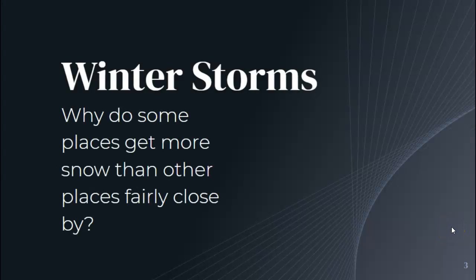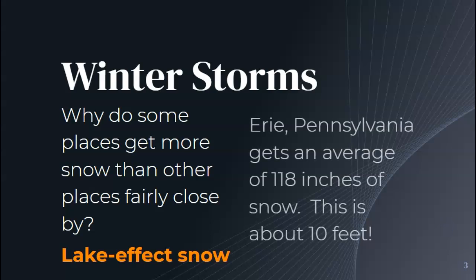Why do some places get more snow than other places fairly close by? Well, the term is called lake effect snow. One place is Erie, Pennsylvania. It gets an average of 118 inches of snow — about 10 feet. Imagine getting 10 feet of snow every year on average. Obviously, we don't get that much. We do have an occasional storm, and sometimes ours involve ice.